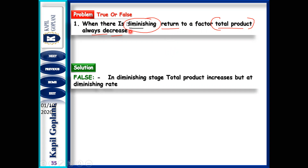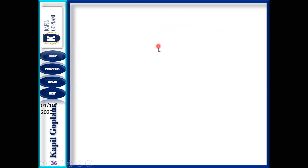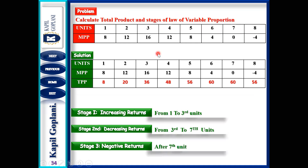What have you seen in the last question? Let me show you the last slide. In this question, TP decreased only when MP was negative. Here, TP was always increasing: 8, 20, 36. When there is increasing return, TP also increases. In diminishing return, MP starts falling, but TP is still increasing.